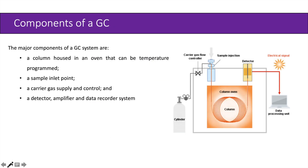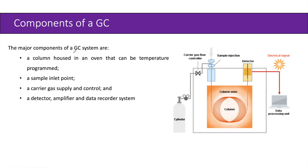Let us see the different components of a gas chromatography system. The major components of a gas chromatographic system are: a column housed in an oven that can be temperature programmed, a sample inlet point, a carrier gas supply and control, and a detector, amplifier, and data recorder system.